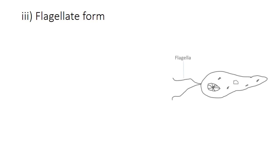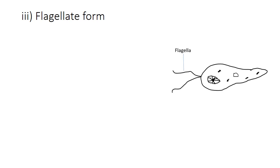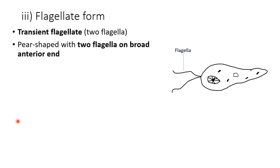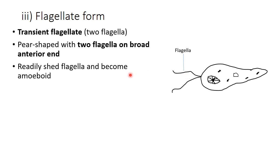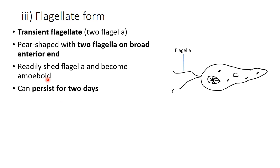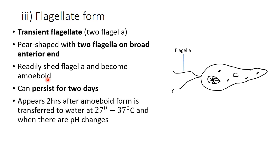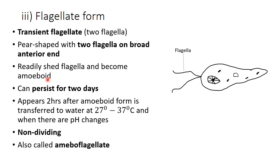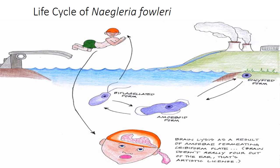The flagellate form of Naegleria fowleri is transient — it can only persist for a short period of time. It contains two flagella on the broad anterior end, which are readily shed and the organism reverts to its amoeboid or trophozoite form. The flagellate form develops when the organism is exposed to unfavorable conditions, allowing it to move to more suitable environments. It is non-dividing and also known as the amoeboid-flagellate.